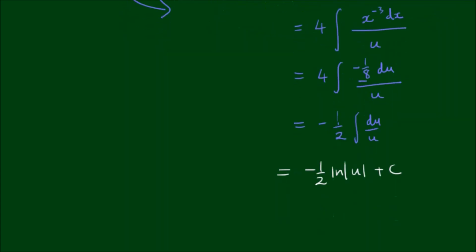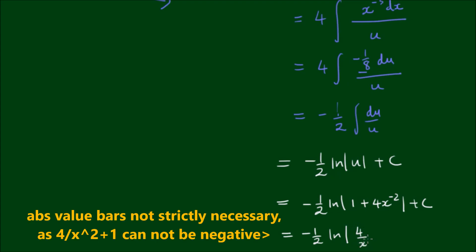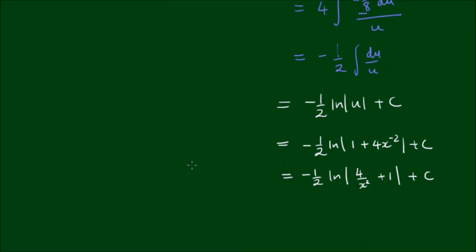To complete this, we back-substitute the expression for u. So we have negative 1/2 times the log of u, where u equals 1 plus 4 times x to the negative 2, plus c. For neatness, I'll rewrite this as negative 1/2 times the natural log of the absolute value of 4 divided by x squared plus 1, plus c. So we've got the result of the integral of 4 divided by x cubed plus 4x using substitution.